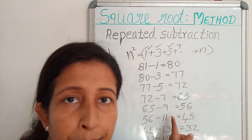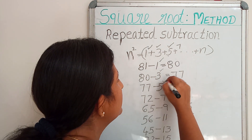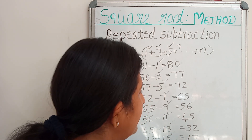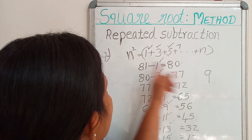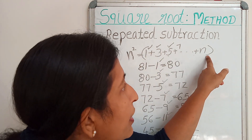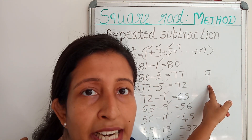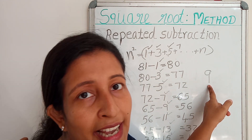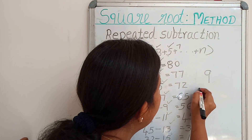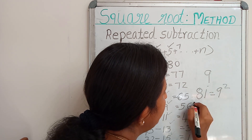How many odd numbers did we use to reach 0? We used 9 odd numbers. That means n-squared is the sum of the first n odd natural numbers. So 81 is the sum of the first 9 odd natural numbers starting from 1, therefore 81 equals 9 squared, and the square root of 81 is 9.